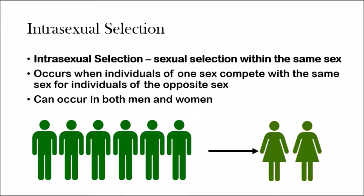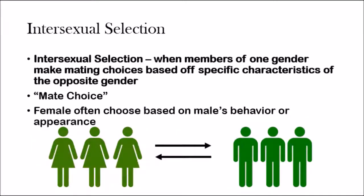There are two types of sexual selection: intrasexual selection and intersexual selection. Intrasexual selection is sexual selection within the same sex — it occurs when individuals from one sex compete with the same sex for individuals of the opposite sex, and it can occur in both males and females. That's like the example of male lions competing with each other for the right to mate with a female lion. Intersexual selection is when members of one gender make mating choices based on specific characteristics of the opposite gender — that's called mate choice. Females often choose based on males' behavior or appearance, which happens even in human beings.